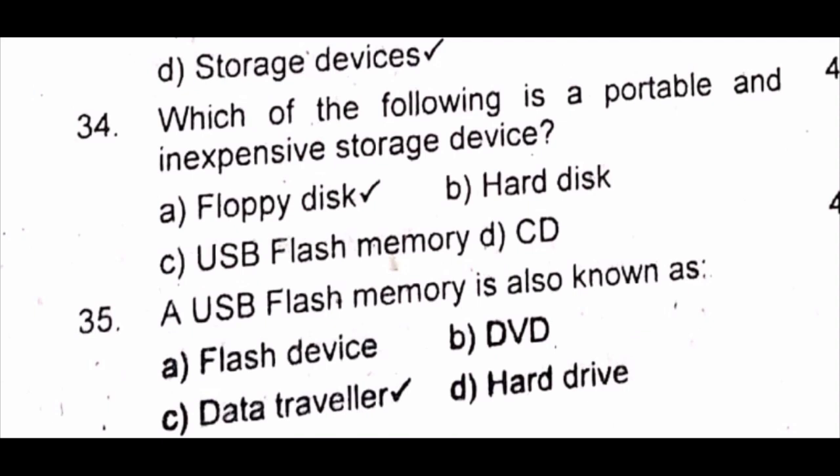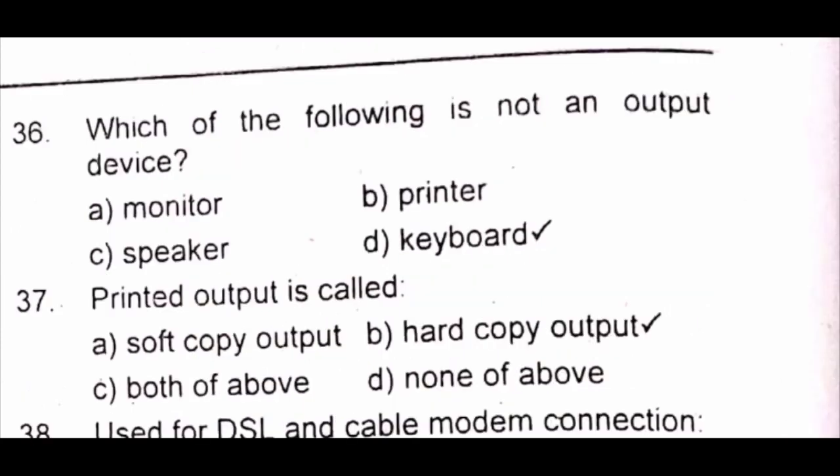Question 34: Which of the following is a portable and inexpensive storage device? A) floppy disk B) hard disk C) USB flash memory D) CD. The answer is A) floppy disk. Question 35: A USB flash memory is also known as A) flash device B) DVD C) data traveler D) hard drive. The answer is C) data traveler.